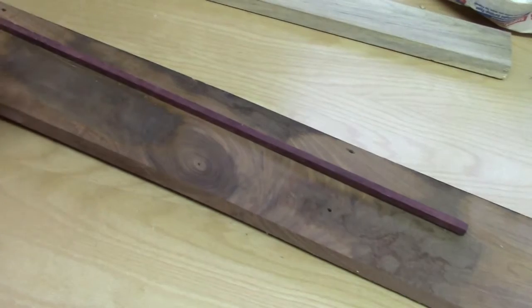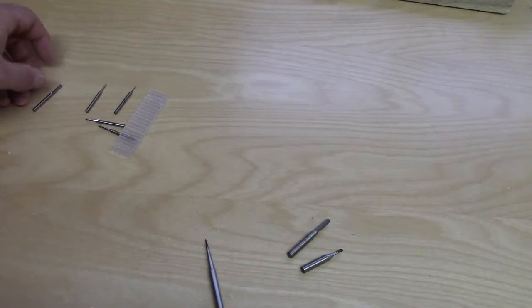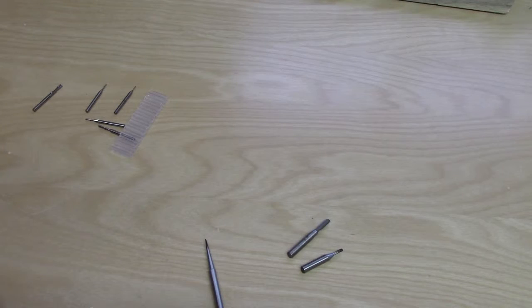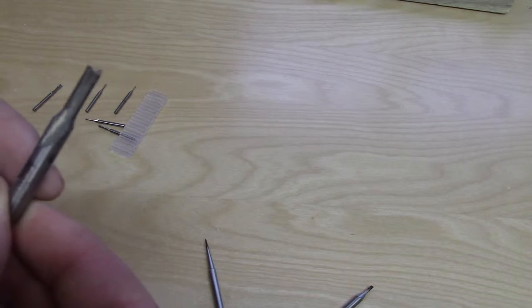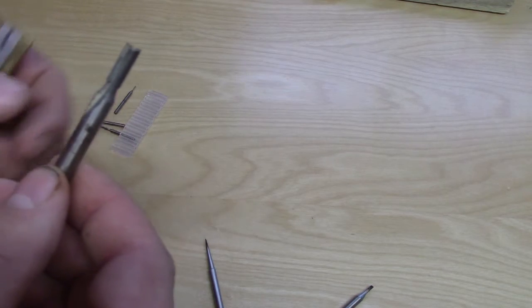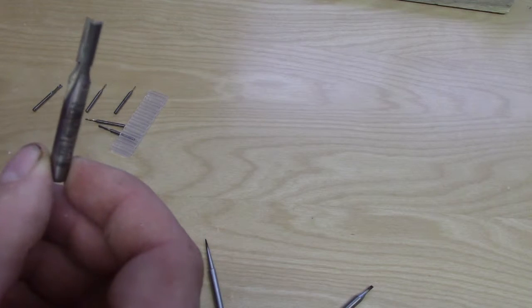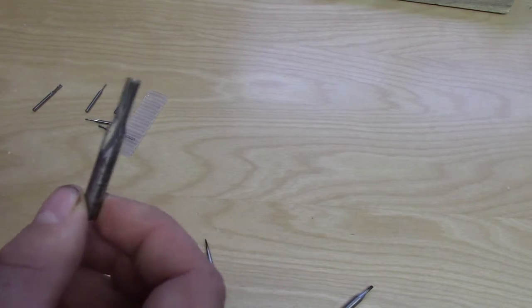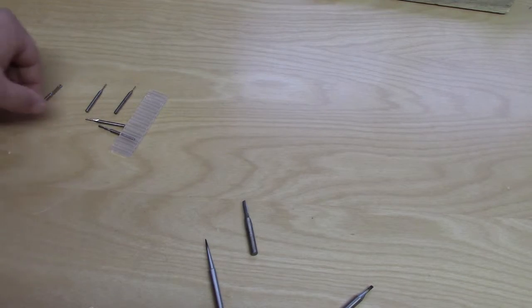All right, now for the type of bits for inlay. Usually when you do an inlay, you have a body that you're trying to carve out. A bigger bit, this is a quarter inch, would be used to auger out probably ninety percent of the material. But more than likely you're going to have some areas in your inlay that are very hard to get into.